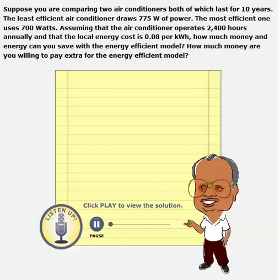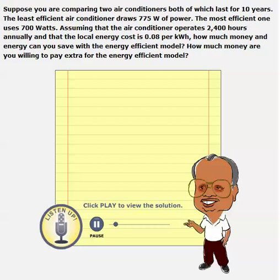Here we are trying to compare two air conditioners, both of which are going to last 10 years. One consumes less power and the other one consumes high power. They both operate for 2,400 hours annually. So we have the power and the time of usage data, and we need to calculate how much energy each of these will consume.